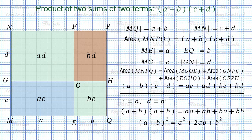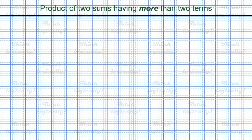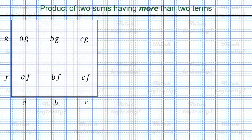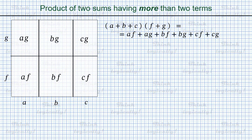This approach can also be applied to an arbitrary number of terms in each of the two sums. The following drawing applies to a sum of three terms multiplied by a sum of two terms. Since 3 times 2 is 6, we have 6 inner rectangles, and consequently 6 terms in the right-hand side of the identity.